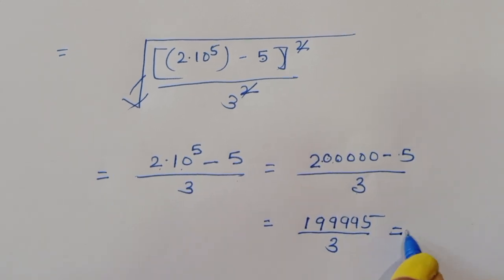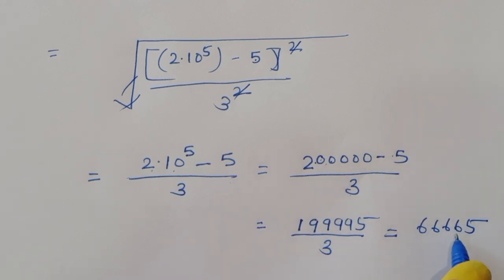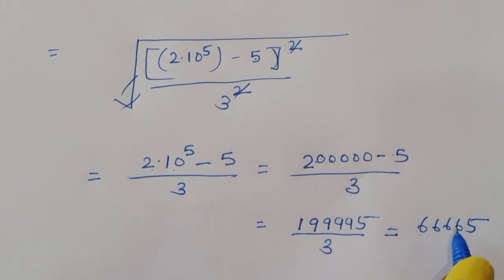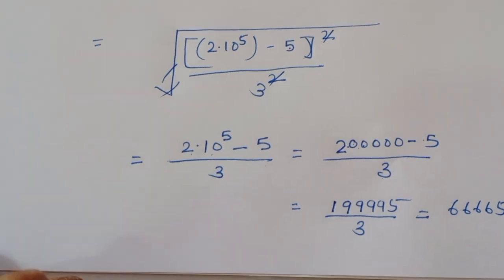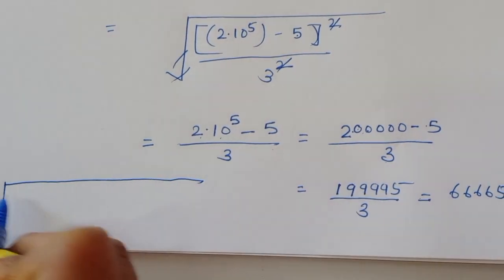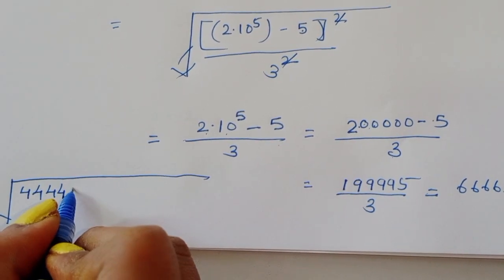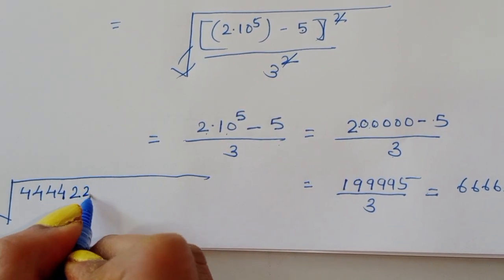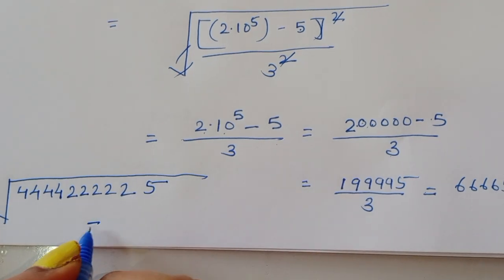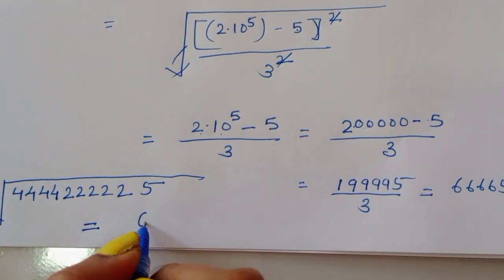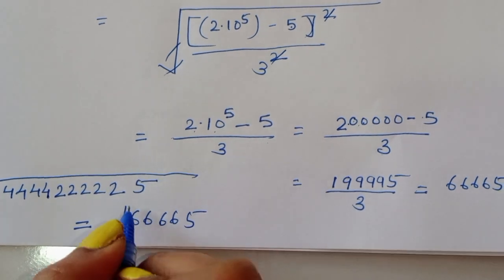Dividing 199995 by 3 gives us 66665. So the square root of 4444 times 22222 times 5 equals 66665. This is the final correct answer.